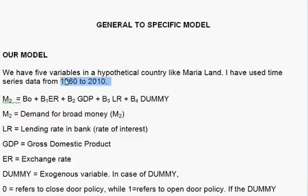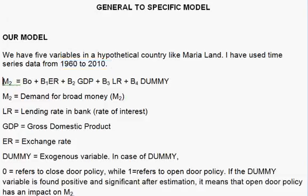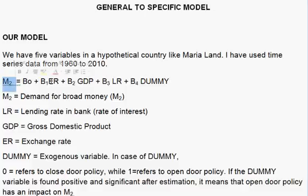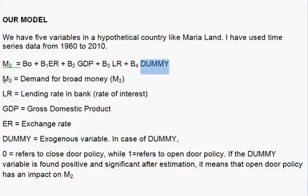Here is our model. M2 is the dependent variable, and ER, GDP, LR, and dummy are the independent variables. M2 is the demand for money.